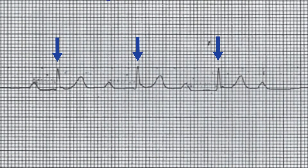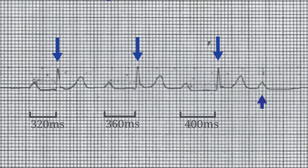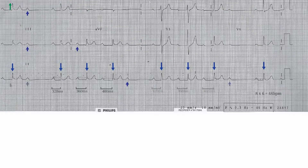The PR intervals are what diagnose the rhythm: the Wenckebach phenomenon. There is progressive prolongation of the PR interval until there is a non-conducted P wave marked here. The PR intervals increase in duration from 320 milliseconds through 360 milliseconds to 400 milliseconds before there is a non-conducted P wave. The process then repeats again with every fourth P wave non-conducted.